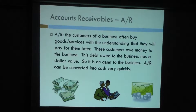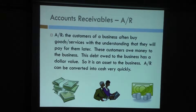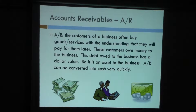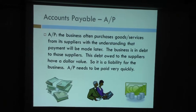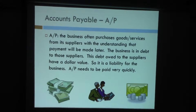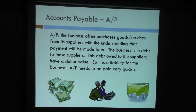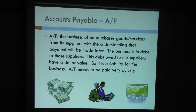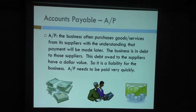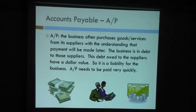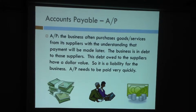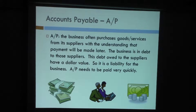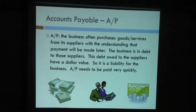Accounts receivable works as follows: customers promise to pay you, then they actually pay you, so the amount comes out of receivables. Accounts payable is the opposite — it represents amounts that you owe others. Accounting is always a two-way street: what is an accounts receivable for you is an accounts payable on the other party's balance sheet. Accounts payable usually arise from suppliers, vendors, or obligations like rent.